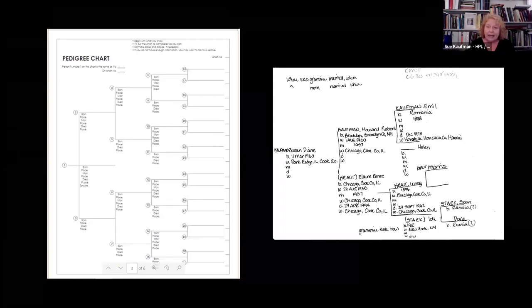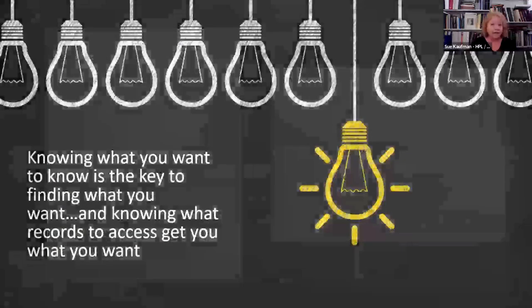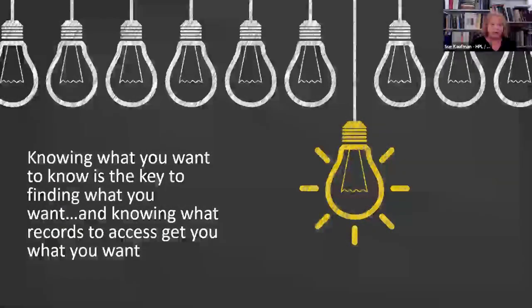I know this pedigree chart is from before 2001 and after 1994 because my mother died in 1994 — so it was created sometime between 1994 and 2001. The missing information becomes my research questions. I don't have where my grandfather Emil got married, and I don't have any information about my grandmother Helen. Where did Emil and Helen get married? When were they married? When was Helen born? When did she die? Where is she buried? Those all become your research questions and your shopping list.